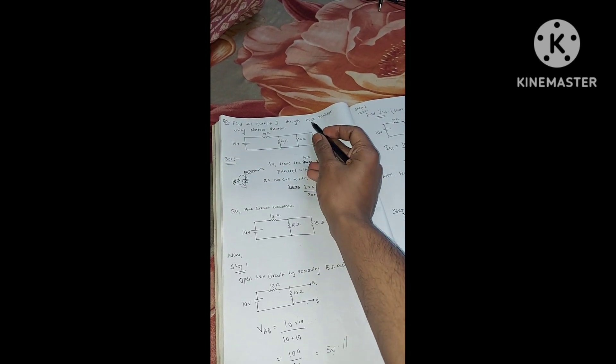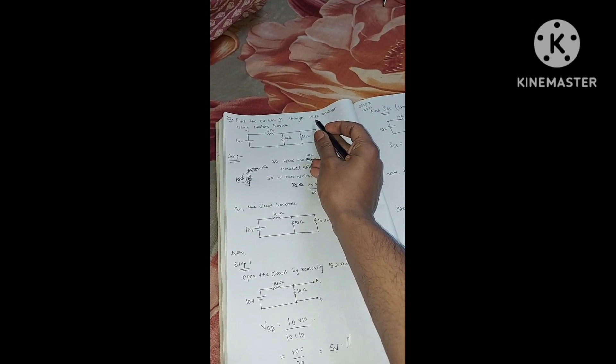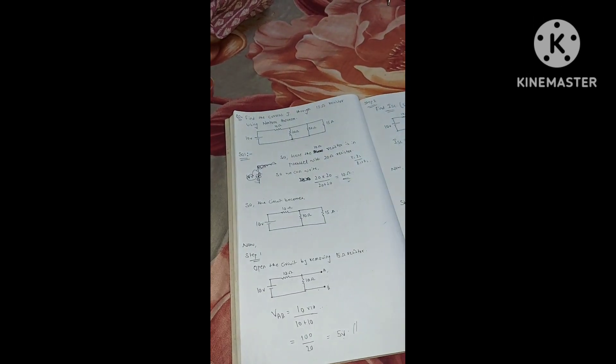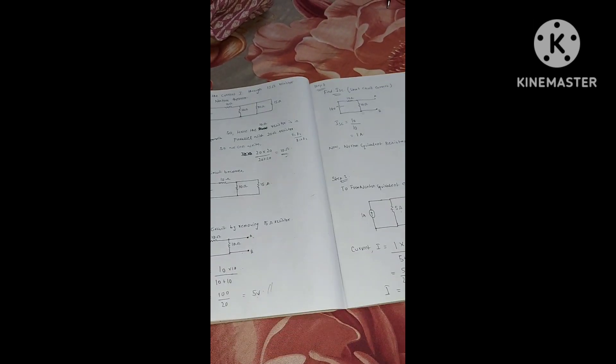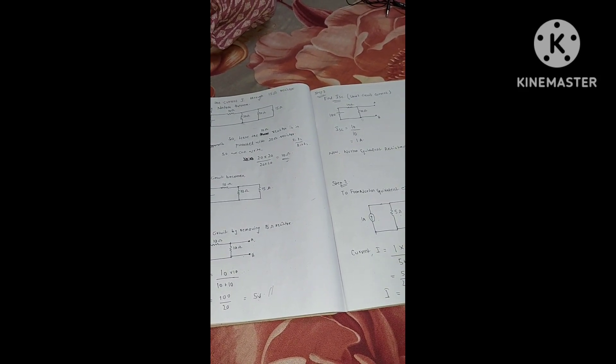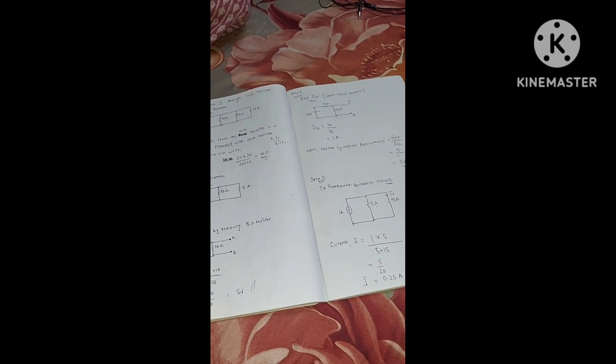So the current through the 15 ohm resistor is 0.25 ampere. This question might come for 5 marks — only the value of the resistor might differ, it could be 10 ohm or 5 ohm. We covered this numerical for Norton's theorem, and out of Norton's and Thevenin's theorem you are definitely going to get one numerical in your semester exams. Thank you.